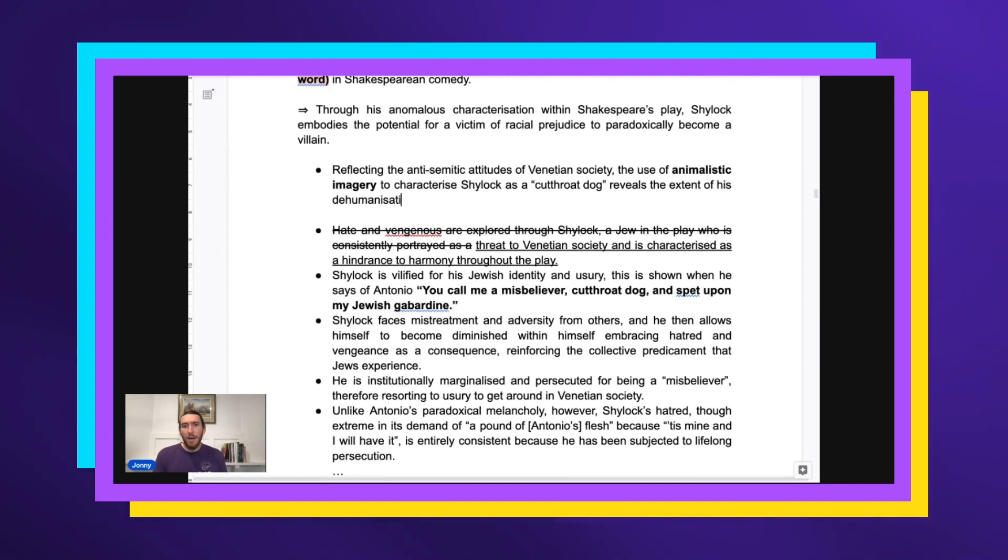The use of animalistic imagery to characterize Shylock as a cutthroat dog reveals the extent of his dehumanization. I'm saying dehumanization because he's being called a dog, so the word I'm using in the effect is really powerful because it clearly relates to the nature of the quote. That's what's key: if you can have a word in your effect that clearly matches the substance of the quote you're analyzing, then it's very easy for the marker to see that you know how to analyze. You're drawing upon that quote and saying something insightful as a Jew. That's a very concise point, but we can actually start building our argument.